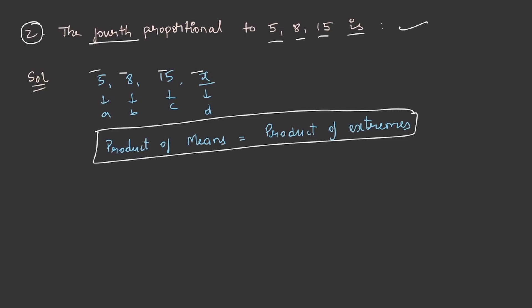Therefore, we can write it in the following way. Now, product of means is equal to product of extremes. Therefore, 5x is equal to 15 into 8 and the value of x will be 24. This is how you can find out the fourth proportional or you can directly substitute in the formula that is D is equal to B into C by A.